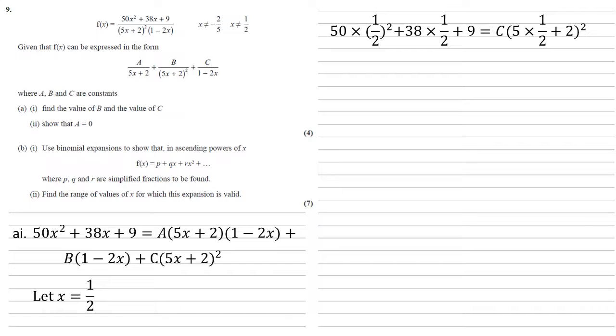Left hand side we get 50 times a half squared plus 38 times a half plus 9. On the right hand side all we're left with is the c times by 5 times a half plus 2 all squared, which simplifying gives us 81 over 2 equals 81 over 4 c, hence c is equal to 2.